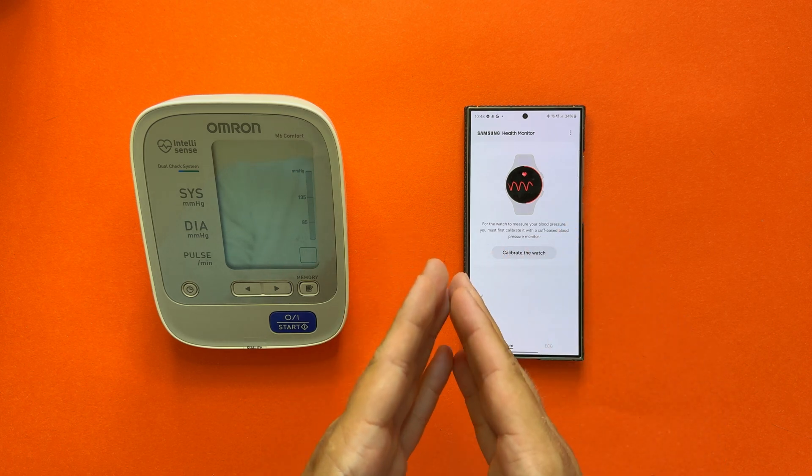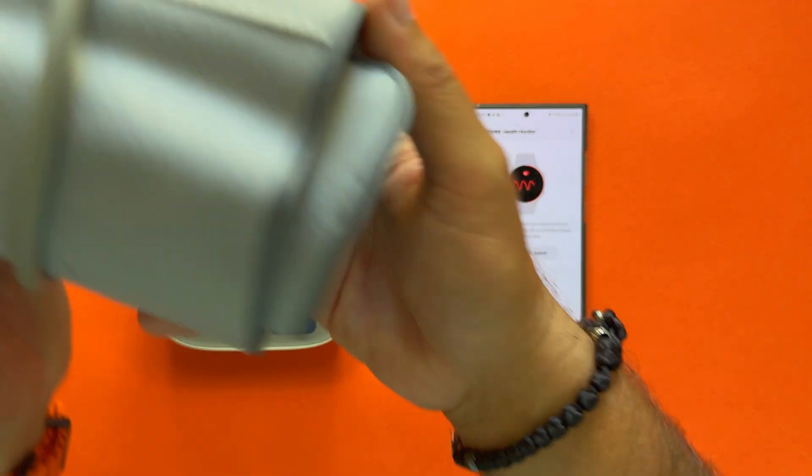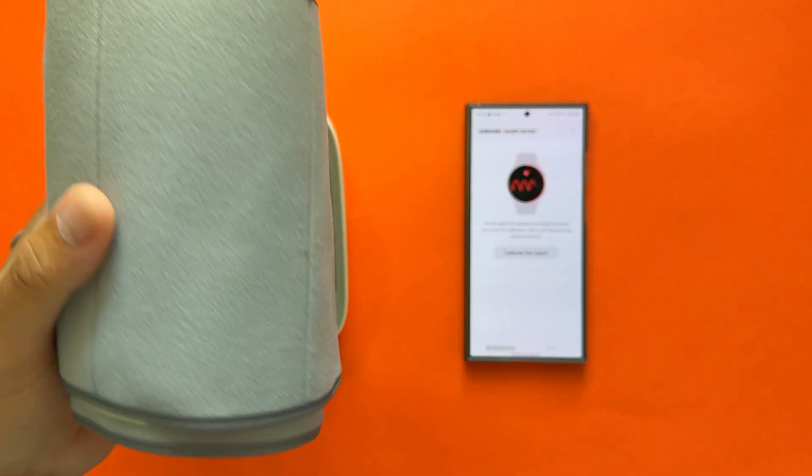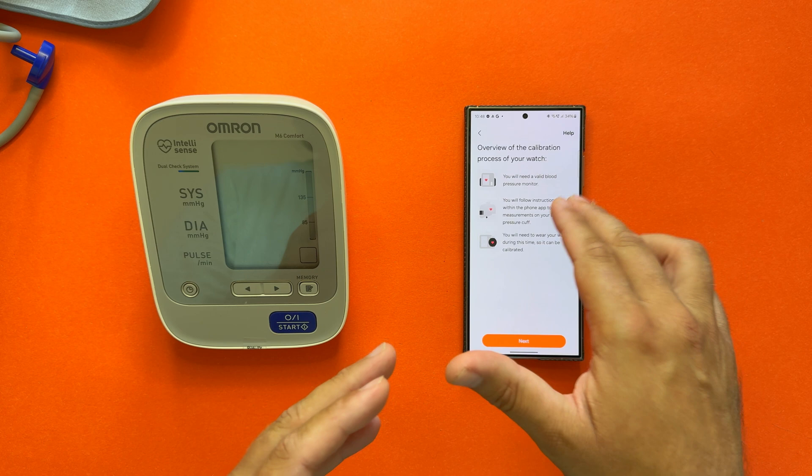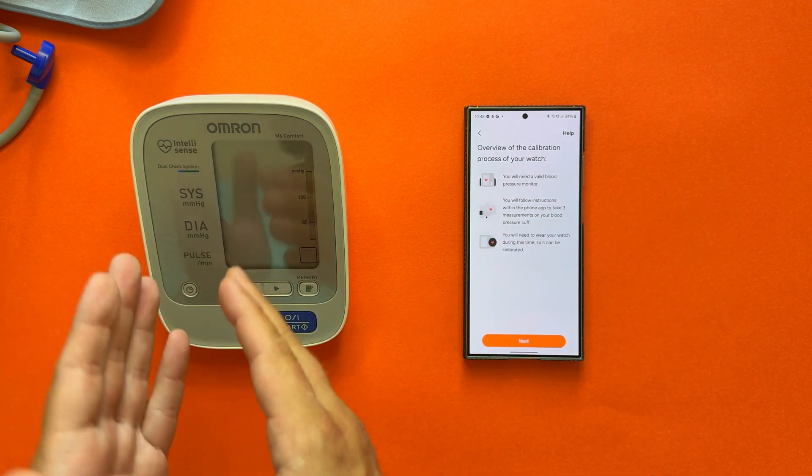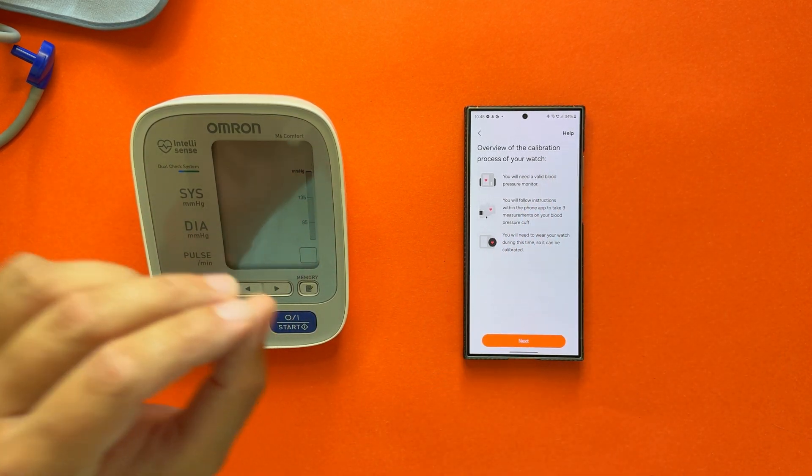For the watch to measure your blood pressure, you first must calibrate it with a cuff-based blood pressure monitor. So this is the blood pressure monitor I have here, also the cuff that I'm going to attach to my arm. Now I'm going to hit 'Calibrate watch'. You will need a valid blood pressure monitor. You need to follow the instructions, and you're about to make three measurements.